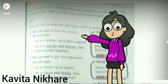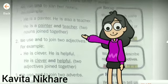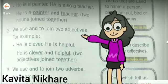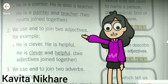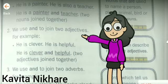Second example: we use 'and' to join two adjectives. 'He is clever. He is helpful.' One person is clever and helpful, so we join them as: 'He is clever and helpful.'